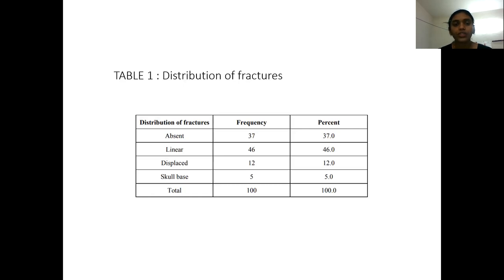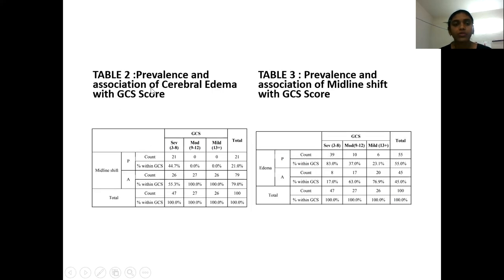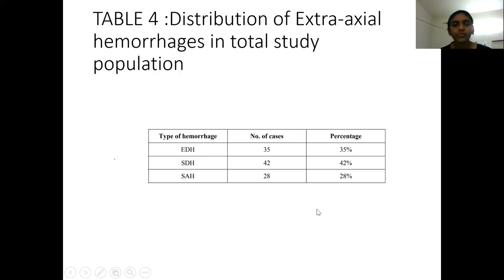Table 1 shows distribution of fractures. The most common fractures are linear, accounting for 46 percent, followed by absent fracture at 37 percent. Table 2 and Table 3 show prevalence and association of midline shift with GCS score. Table 4 shows distribution of extra-axial hemorrhages in the total study population.